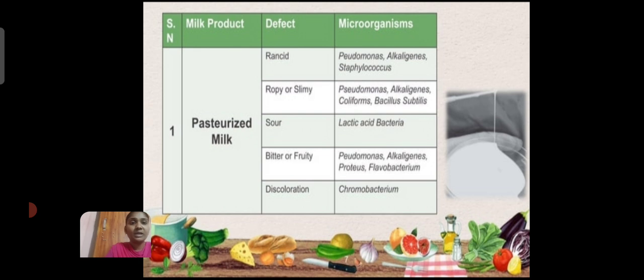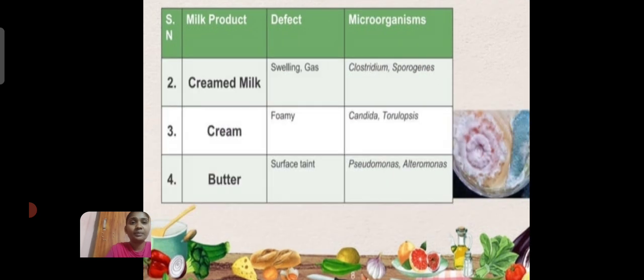Defect: Discoloration. Microorganism: Chlorobacterium. Milk product: Creamed milk. Defect: Swelling or gases. Microorganism: Clostridium sporogenes. Milk product: Cream. Defect: Foaming. Microorganism: Candida tropicalis.